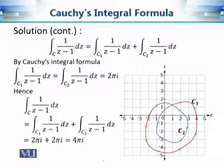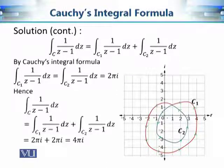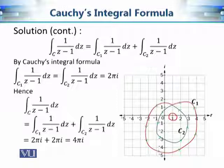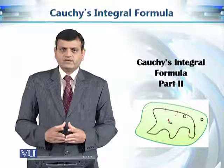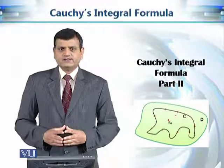That is how we can evaluate integrals along contours which are not simple — by writing them as a union of simple closed contours. Note that both C1 and C2 had the point 1 as an interior point. In some cases, one component contour may not contain the singular point in its interior, and then that integral equals 0 by analyticity. In this module, we have discussed further examples where Cauchy's integral formula is extremely helpful in evaluating contour integrals.